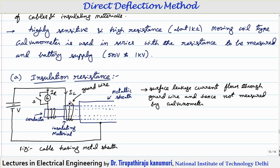While measuring high resistance, some problems are encountered. For example, when measuring the resistance of a cable, there will be a conductor and an outer metallic sheath.